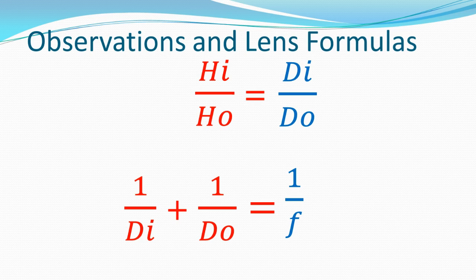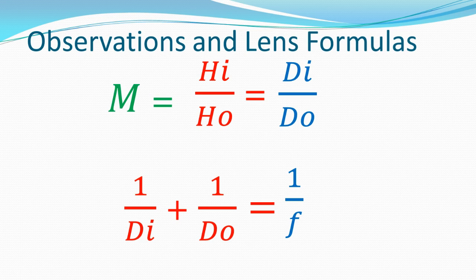We know that a hi/ho or di/do ratio larger than 1 means a bigger image, and if it's less than 1, it's a smaller image. We call this our magnification formula. Magnification is either the ratio of the height of the image to the height of the object, or the distance of the image to the distance of the object.